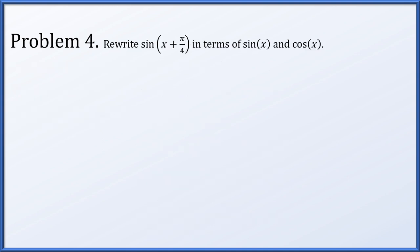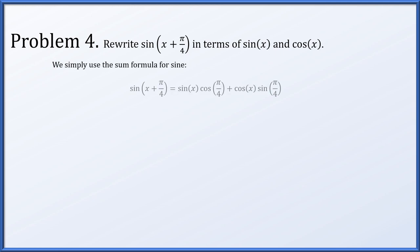For problem 4, let's rewrite the sine of x plus π over 4 in terms of both sine and cosine of just x. This is quite straightforward — we just need to use the sum formula for sine. So the sine of x plus π over 4 is sine x cosine of π over 4 plus cosine x sine of π over 4. Cosine and sine of π over 4 are both root 2 over 2, which can be factored out, so we've rewritten sine of x plus π over 4 with just a sine x and a cosine x.